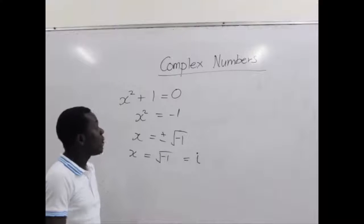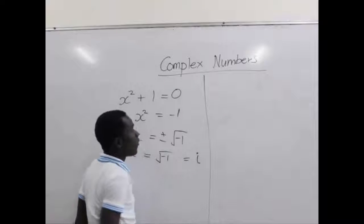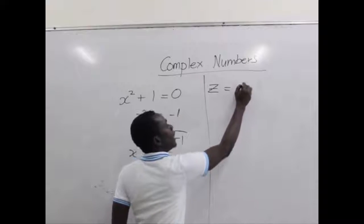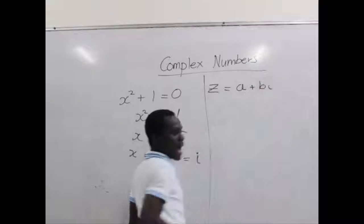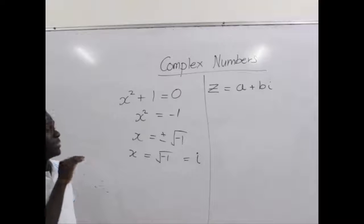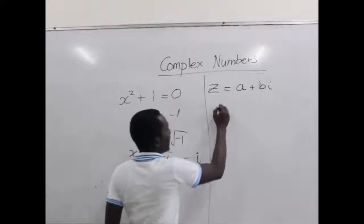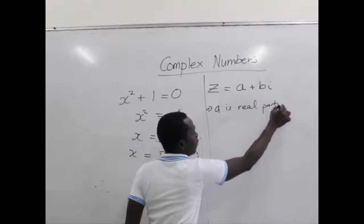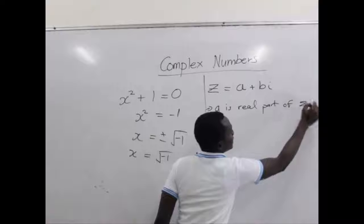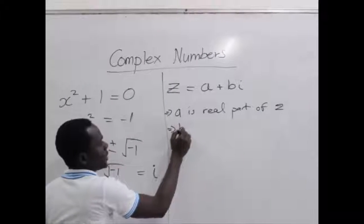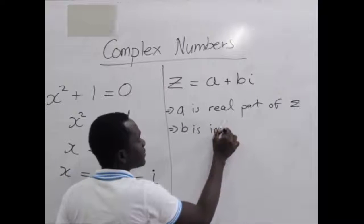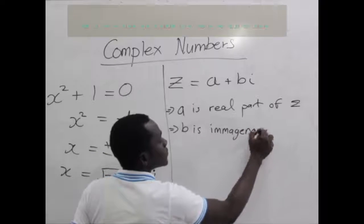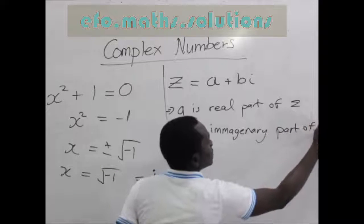Now, any complex number we can talk of occurs in a standard form. Say z is a complex number — it is written in the form a plus bi. The part a is called the real part of the complex number z, and b is the imaginary part of z.